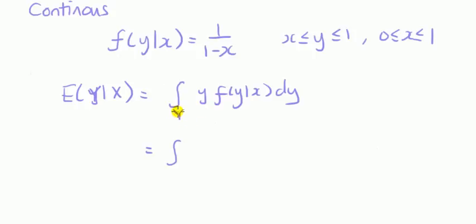Now here y goes from x to 1. So lower limit is x, upper limit is 1. So it's unlike the other cases where both of them were numbers. This x here is whatever number we're conditioning on.